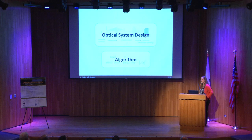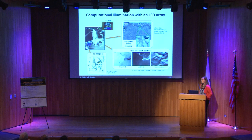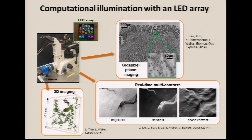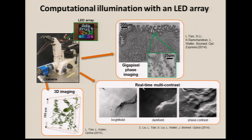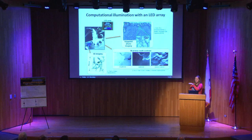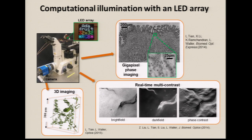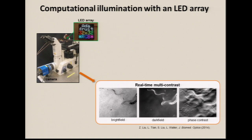Now I want to move to a totally different optical system that's incredibly related but has a different optical system design — our algorithms will be fairly similar. This is a beautiful microscope platform introduced a couple of years ago. The idea is you take your normal microscope, remove the illumination unit, and replace it with a programmable LED array — something like a toy you buy online from a hobbyist shop, controlled by an Arduino. Each LED in the array illuminates the sample from a unique angle. Using computational illumination by designing the patterns on this LED array, we can do gigapixel phase imaging, real-time multi-contrast, and 3D.